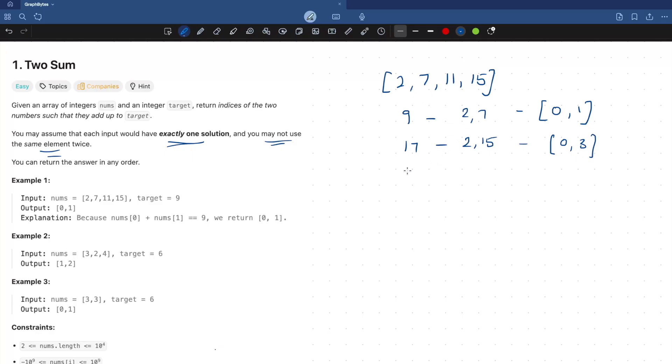And for example, if the target is 20, it would be an invalid test case. As they mentioned that there will be exactly one solution and in this case, there won't be any solution. So there won't be any such input such that it won't add up to the given target.